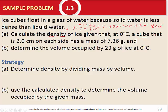Part B asks for the volume, so we rearrange: density equals mass over volume becomes volume equals mass over density. Rearranging simple equations is an early algebra skill. If you need help, there's a tutorial on rearranging formulas on Blackboard. We take the mass of 23 grams divided by the density calculated in Part A.